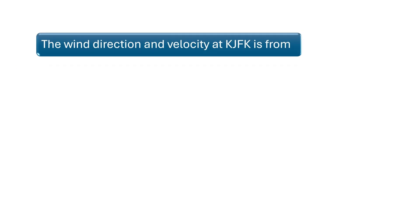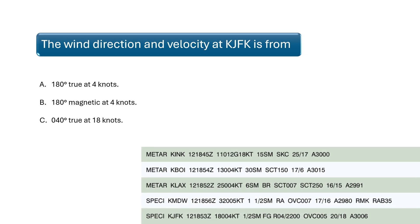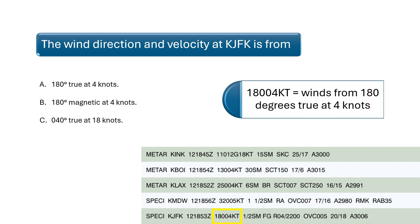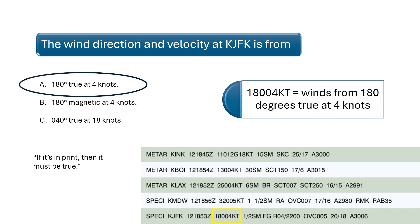Question 6 asks: What is the wind direction and velocity at KJFK? Recall that wind direction and speed is indicated by the second set of digits. In this case, the digits 18004 followed by KT means the winds are from 180 degrees true at 4 knots. One way to remember whether winds are magnetic versus true is the phrase: if it's in print, then it must be true. That means all wind directions shown on a METAR and TAF are true directions, not magnetic.